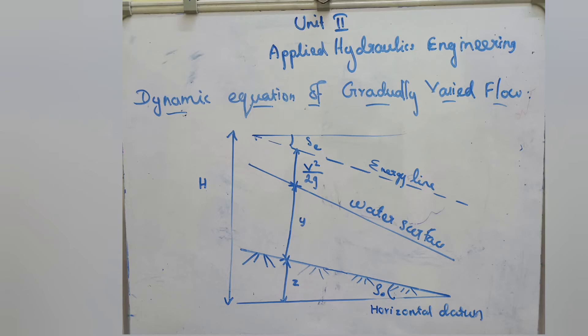Today's topic is from Applied Hydraulics Engineering. The important question is the derivation of the dynamic equation of gradually varied flow. Gradually varied flow occurs when the depth of the flow changes gradually over a long length of the channel, for example, backwater in dams. Here we consider a rectangular channel having a gradually varied flow, where the depth of the flow gradually decreases in the direction of flow.